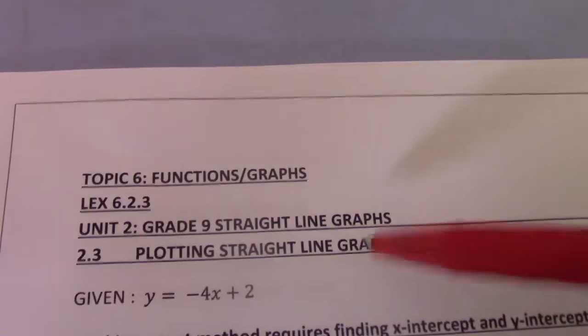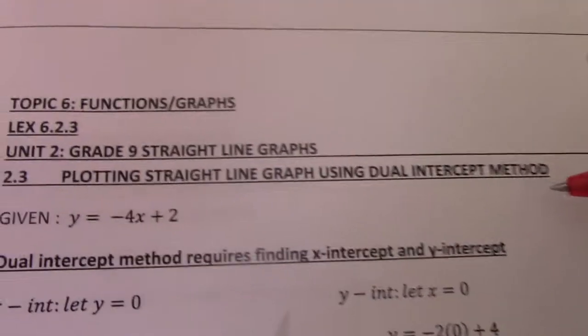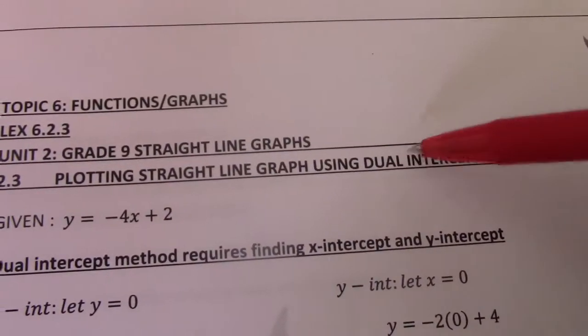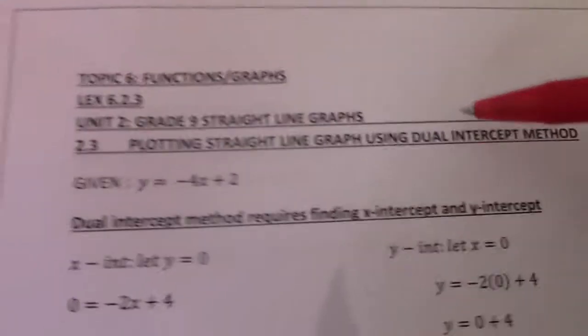Right, now again, Grade 9 straight line graph just to refresh your mind. Plotting a straight line using dual intercept method. When I say dual, I am using two intercepts to find two intercepts and I will draw a line through it.